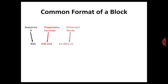After mentioning the preparatory function you have to mention the dimension data. Suppose I want to move 10mm along X axis in rapid mode — I can write G00 X10. To move 10mm along X axis and 10mm along Y axis, I can write G00 X10 Y10. The cutting tool will rapidly move from its current location to 10mm along X axis and 10mm along Y axis simultaneously, achieved by mentioning the dimension data.